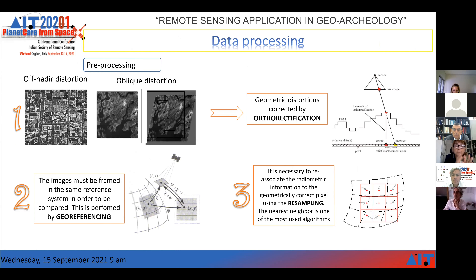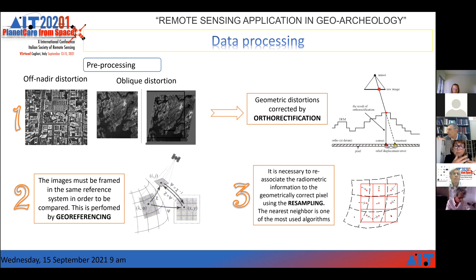After data acquisition with the original image, the necessary pre-processing consists of three fundamental steps. First, orthorectification — because it is often necessary to correct for geometric distortions. Second, georeferencing — the image must be framed in a reference system in order to be compared. After orthorectification and georeferencing, resampling is necessary, meaning it is necessary to reassociate the radiometric information to the geometrically correct pixel.